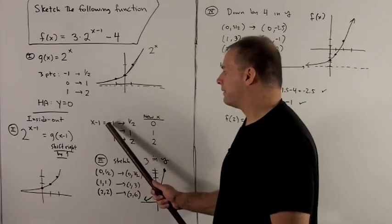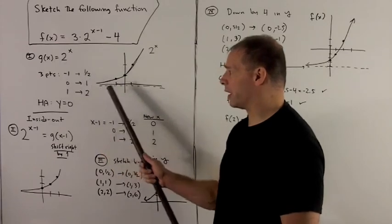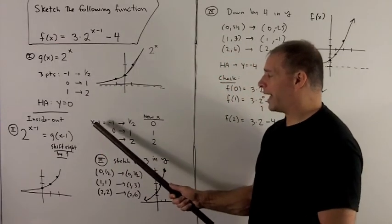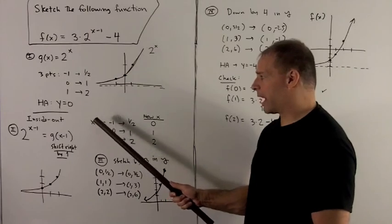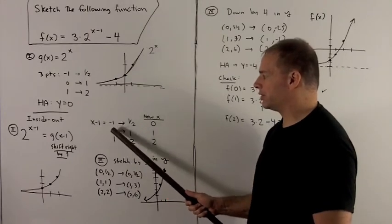So then I can follow this through to the points I've already computed. So I'm just saying, what x gives me x minus 1 equals minus 1, 0, or 1?